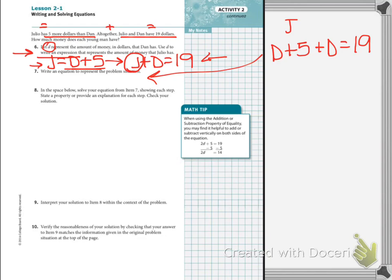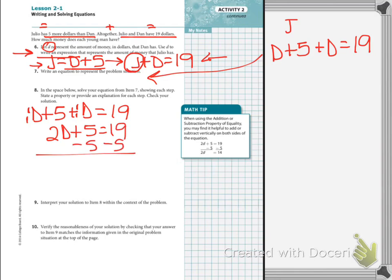So now can we solve this? Well, D plus 5 plus D is 19. Remember, there are invisible ones in front of these Ds. So D plus D is 2D, plus 5 is 19. Undo the add, subtract. Undo the multiply, divide. Dan has $7.